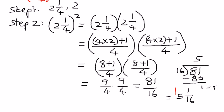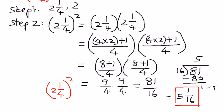So what did we do here? We had a mixed fraction as an exponent. We recognized the base term, we recognized the exponential term, we applied the concept, and then we simplified the math to arrive at the answer. The answer for 2 and 1 fourth raised to the power of 2 is equal to 5 and 1 over 16.